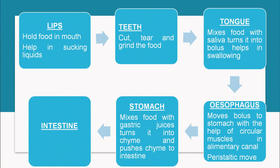The esophagus moves the bolus to the stomach with the help of circular muscles in the alimentary canal. All parts of the alimentary canal, especially after the esophagus, are richly supplied with circular muscles. In the esophagus, stomach, and intestine, the peristaltic movement due to these circular muscles in the walls helps in the mechanical digestion of food, moving the bolus to the stomach — this is known as peristaltic movement.